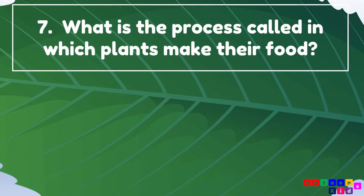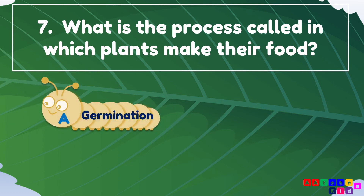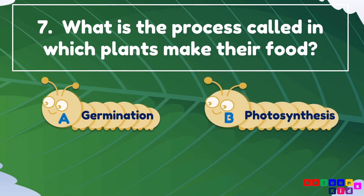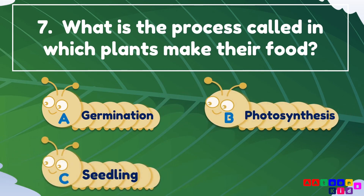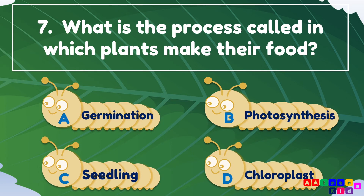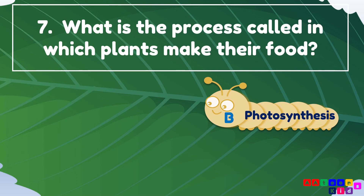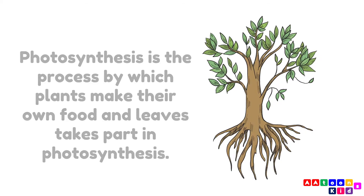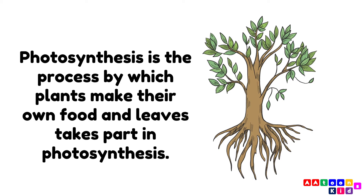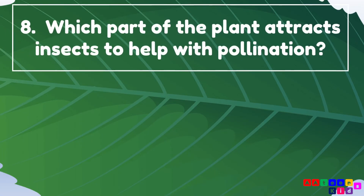What is the process called in which plants make their food? Germination, photosynthesis, seedling, or chloroplast? The answer is photosynthesis. Photosynthesis is the process by which plants make their own food, and leaves take part in photosynthesis.